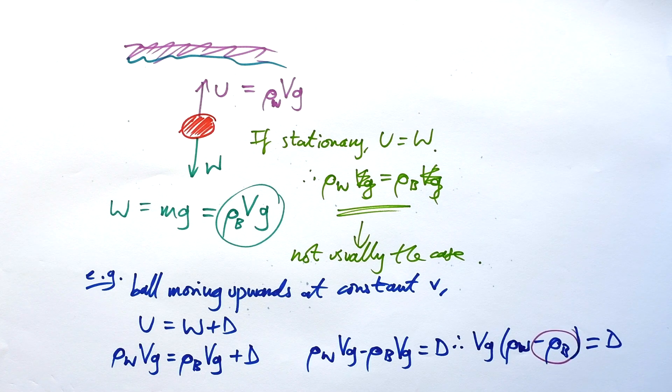So, let's say that ultimately we want to find out the density of the ball. All you have to do is take Vg over to the other side and then rearrange to find ρ_B, because we know what the density of water is. That's 1000 kilograms per metre cubed.